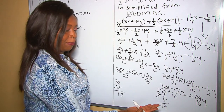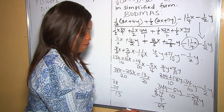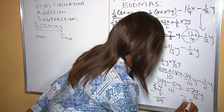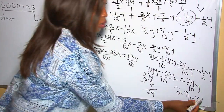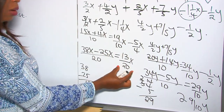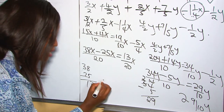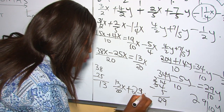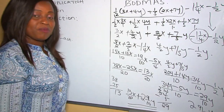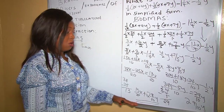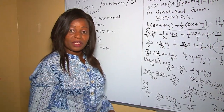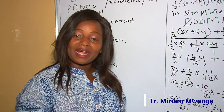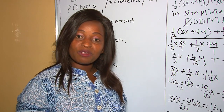We cannot leave the answer as an improper fraction, so we convert to a mixed fraction. 29 over 10: 10 goes into 29 twice (giving 20), remainder 9, so it's 2 and 9 over 10 y. This is our y, and it's positive. Joining with our x, the final answer is 13 over 20 x plus 2 and 9 over 10 y. That was KCPE 2011. With BODMAS we have solved the algebraic question perfectly. Subscribe, like, and leave a comment — practice makes perfect. Thanks for watching!